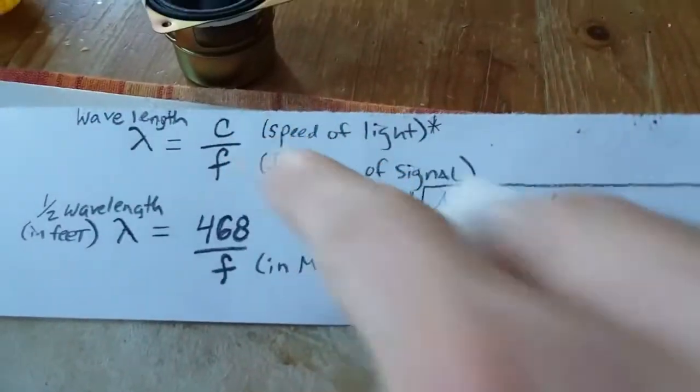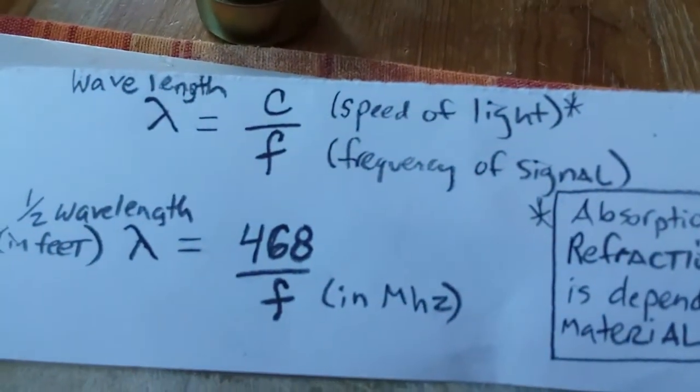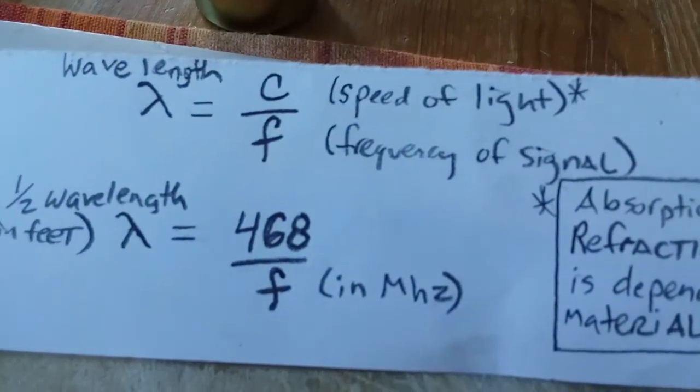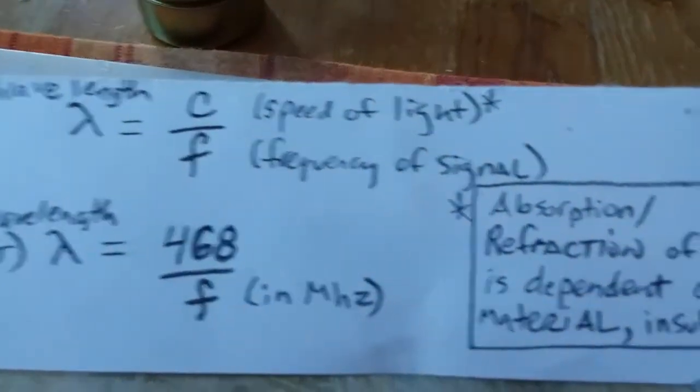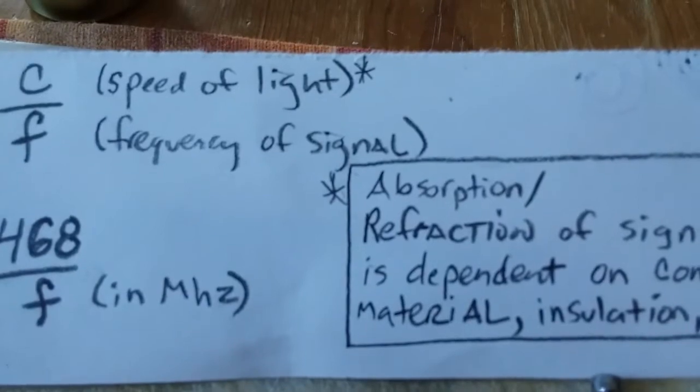A note about the original formula for the wavelength is the speed of light divided by the frequency of the signal. That's speed of light in a vacuum, or about 300 million meters per second.